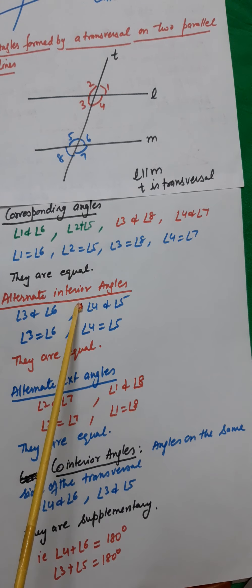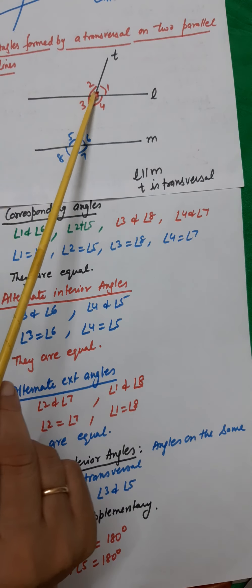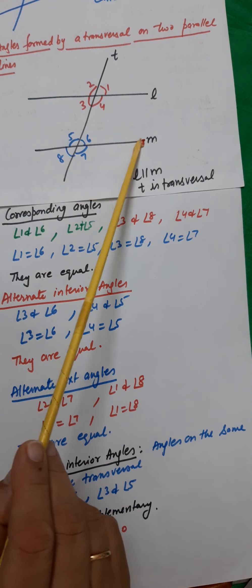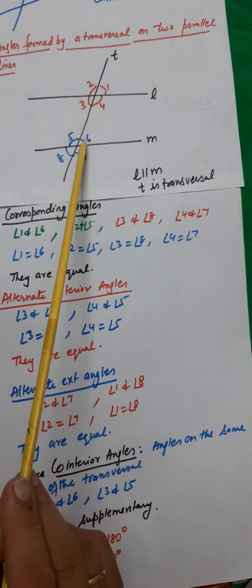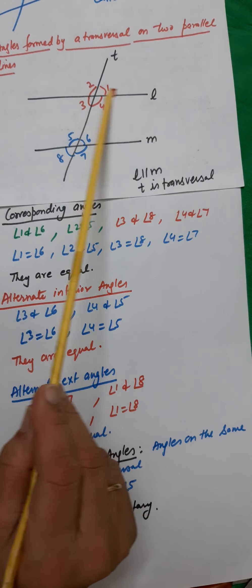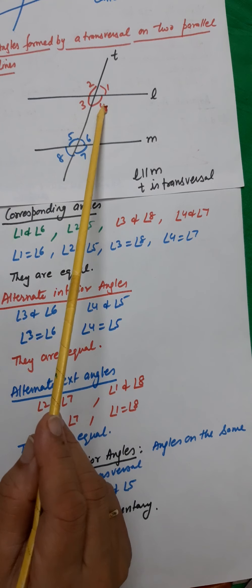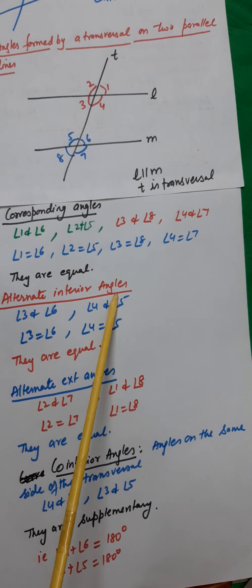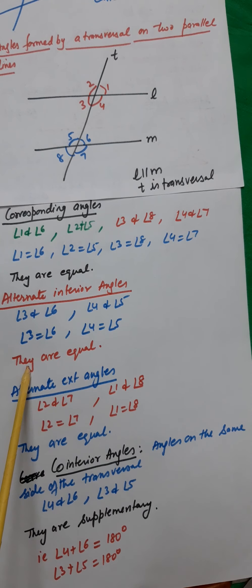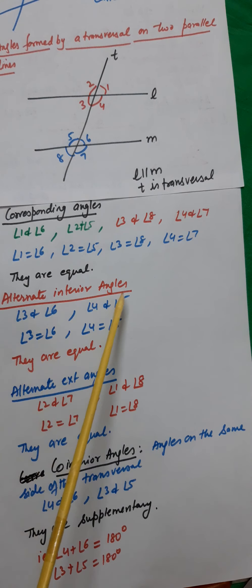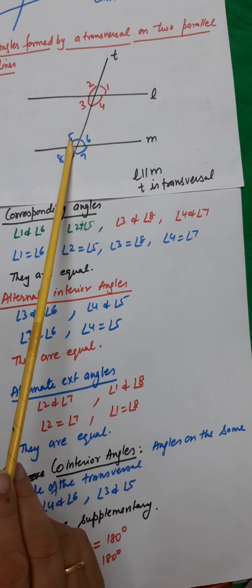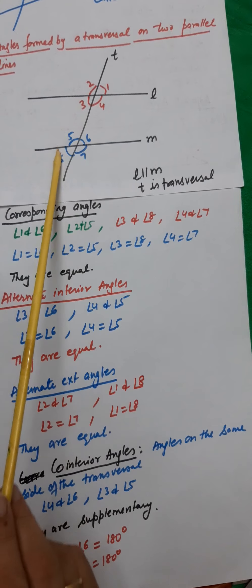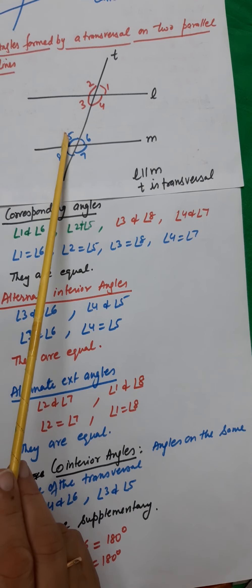Next is alternate interior angles. What are alternate interior angles? When you get a Z-shaped structure formed here — angles 3 and 6 are forming a Z-like structure, so they are alternate interior angles. Similarly, 4 and 5 are also alternate interior angles. The property is again the same — they are equal. Alternate interior angles are equal. So angle 3 equals angle 6 and angle 4 equals angle 5. Suppose angle 4 is 120 degrees — then angle 5 will also be 120 degrees.